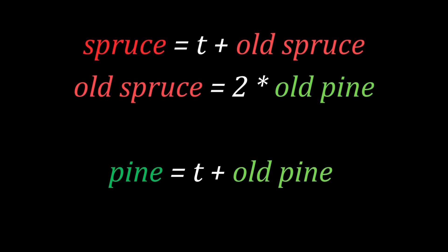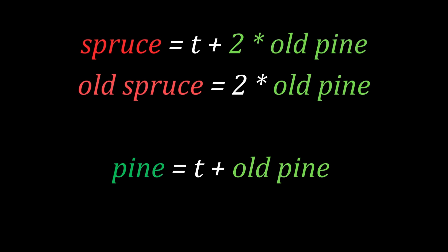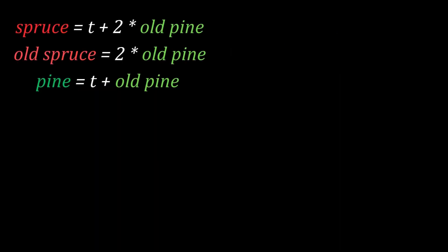we know that the old spruce is twice as old as the old pine. So the new spruce equation is t + 2 times the old pine. We also know that the new pine is 4 times the old pine through plugging in the equations. So 4 times the old pine equals t + the old pine, or t = 3 times the old pine.